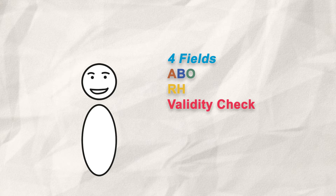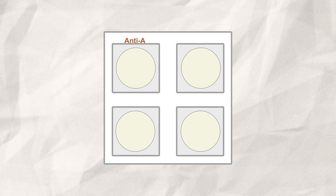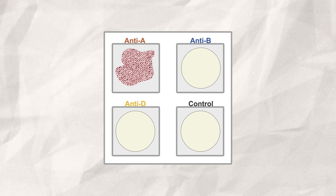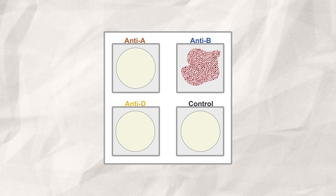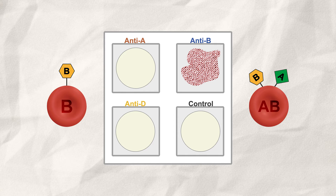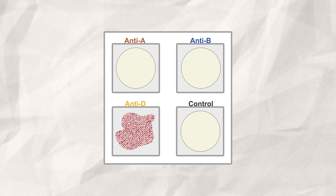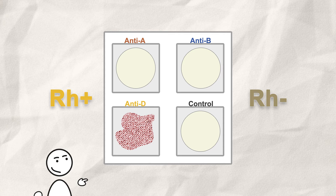We can test ABO, Rh, and even check if the test is valid or not. The first field has antibody A, the second antibody B, the third antibody D, and the last one has no antibodies at all — just the same phosphate buffer as the rest. This means if the control field starts to agglutinate, the whole test is invalid and has to be redone. An agglutination in field A means you have antigen A on your blood cells, resulting in type A or AB. An agglutination in field B confirms antigen B, so it is either type B or AB. A reaction with antibody D shows you the Rh factor.